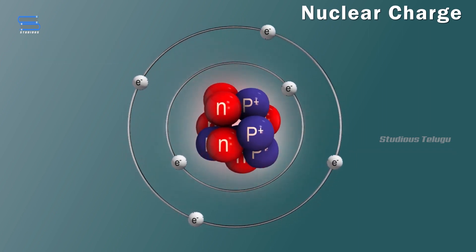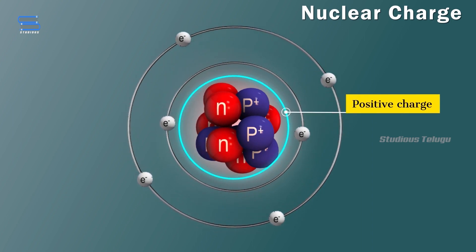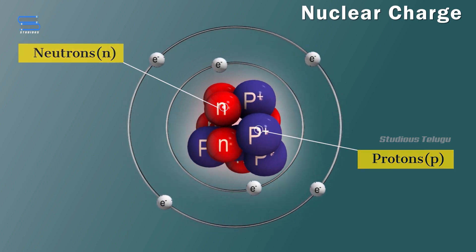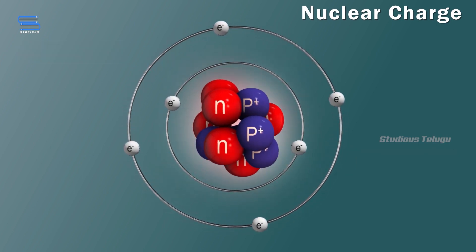The nuclear radius is another intriguing property. It represents the size of the atomic nucleus. Despite being incredibly small, nuclei vary in size based on the number of protons and neutrons they contain.